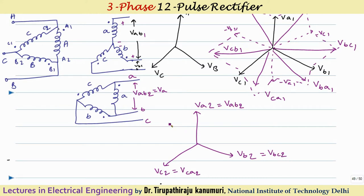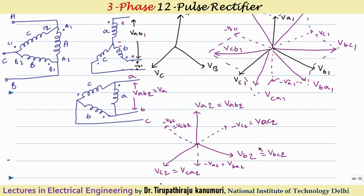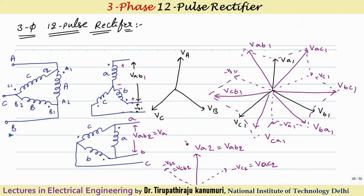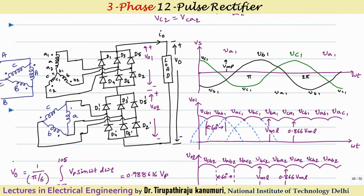Comparing the line voltages of the two secondaries, VAB2 is vertical, aligning with VA1, but VAB1 is leading by 30 degrees. That means, with respect to the line voltages of these two secondaries, they are displaced from each other by 30 degrees. We are going to use this analysis to analyze the 12-pulse rectifier.